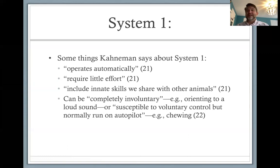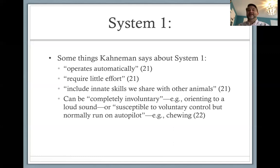Another example: someone speaking words in my native language. Understanding the meanings of those words is a mental activity, but it occurs completely involuntarily. I can't not understand the meanings of words I hear in my native language. But there are other system one processes that are susceptible to voluntary control but normally just run on autopilot.